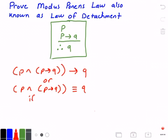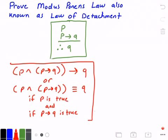Or another way of writing this is P and P implies Q is logically equivalent to Q. And this, of course, is if P is true and if P implies Q is true. So this is just another way, or two other ways, of writing the modus ponens law.